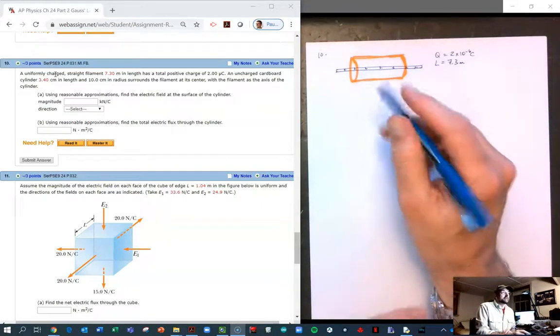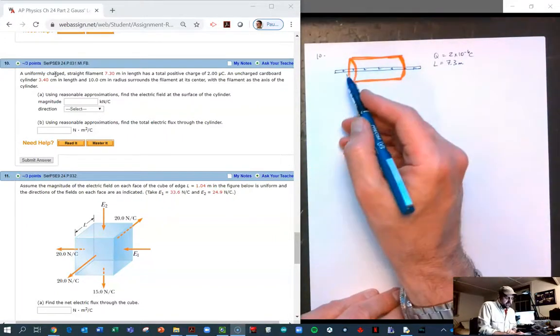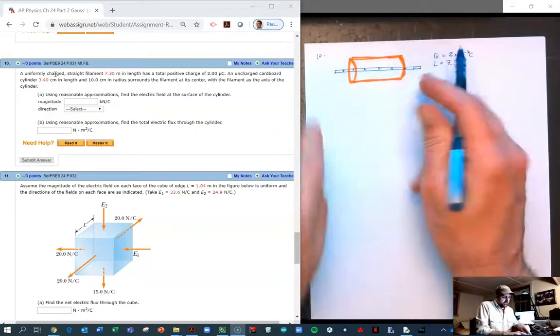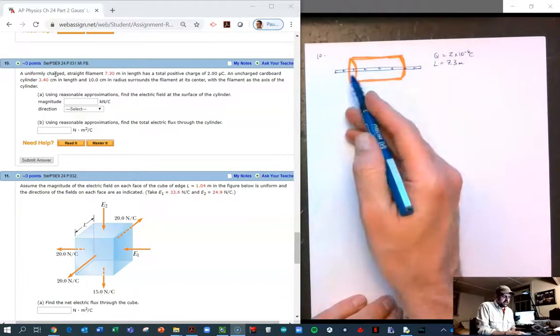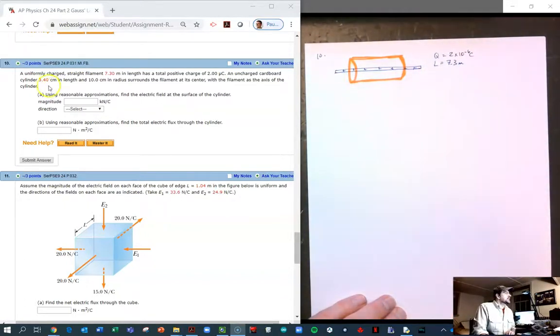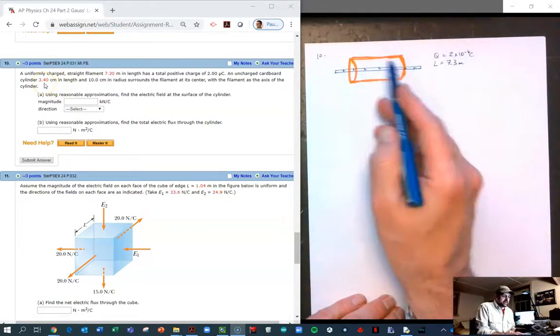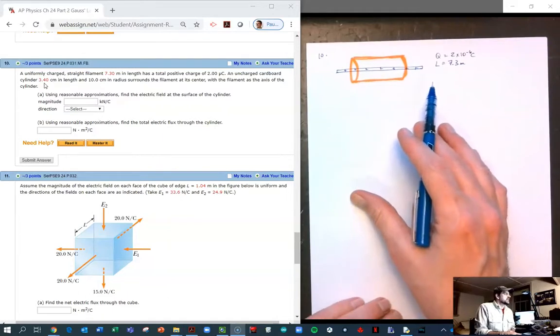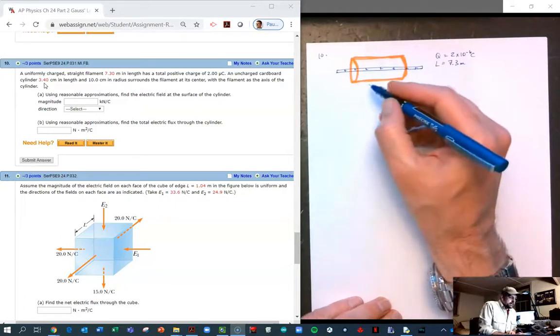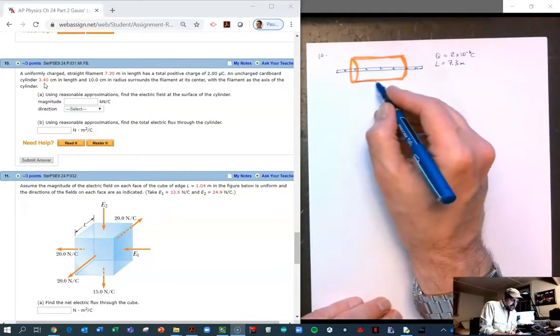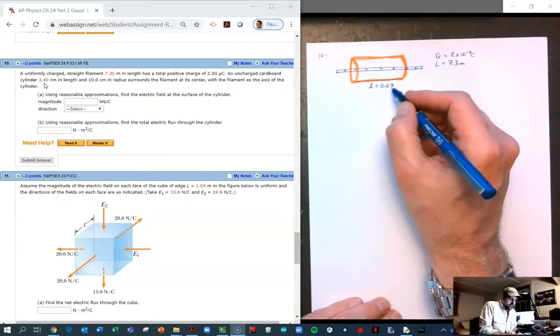The reason we can use Gauss's law here is we are ignoring the edge effects. Imagine this line stretches out really far. Obviously 7 meters is much bigger than 3 centimeters, so this for all practical purposes is an infinitely long rod compared to our cardboard cylinder.